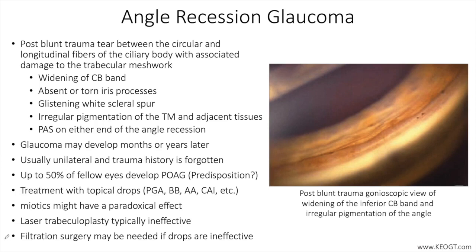On examination, gonioscopy is required to evaluate and quantify the presence and degree of angle recession post-trauma. For this reason, all patients with history of ocular trauma should undergo detailed gonioscopy on presentation or soon after as conditions allow — for example, once a hyphema has resolved. If the contralateral eye was free of trauma, the anatomy of both eyes can be compared to identify subtle differences and enhance diagnostic capabilities.